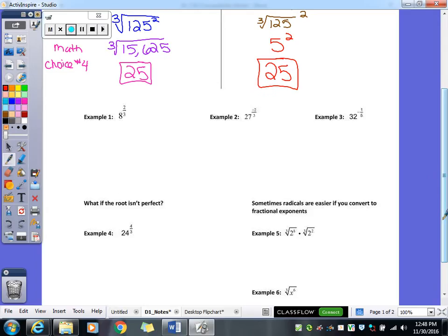So let's take a look at our examples we have down here. We have 8 to the 2 thirds power. So again 2 is our power. So I'm going to put a little P. 3 is my root. So I've got to put a little 3 outside of my radical sign. My third root of 8 squared. So what is our third root of 8? 2. And then I have to square it so our final answer is 4.